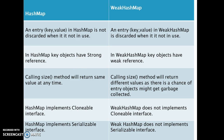Second difference: in HashMap, key objects have a strong reference. In WeakHashMap, key objects have a weak reference.